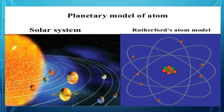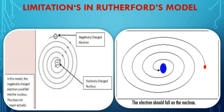Rutherford's model of an atom was somewhat like that of the solar system. Just as the sun is at the centre and planets revolve around it, in an atom the nucleus contains the main mass and electrons revolve around it in orbits or shells. However, according to electromagnetic theory, a moving electron should accelerate and continuously lose energy. Due to this loss of energy, the electron's path may reduce and finally the electron should fall into the nucleus, making the atom unstable. But atoms are stable, so Rutherford's model failed to explain the stability of an atom.